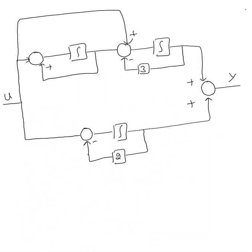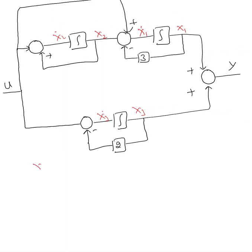Here is the last example. In this example we have three integrators, so that's x1 with x1 dot, x2 with x2 dot, and x3 with x3 dot. Looking at the diagram, x1 dot equals minus 3x1 plus x2 plus u.